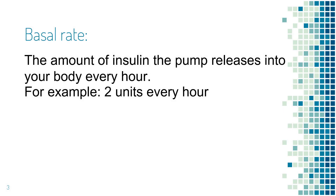Basal rate is the amount of insulin the pump releases into your body every one hour. For example, a basal rate of 2 units per hour means the pump gives you 2 units of insulin every hour.